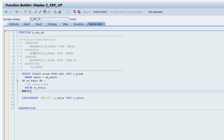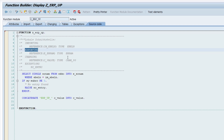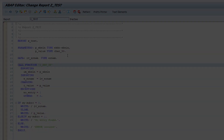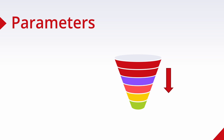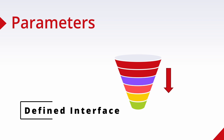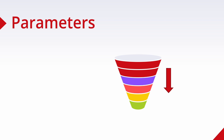Now I would like to explain parameters more closely, because it is important that in the definition of the function module you use importing and exporting, whereas when you call a function module you use them the other way around. Data is transferred via a defined interface consisting of various parameters - the parameters are the interface. Import parameters are used to pass values or variables to the function module when it is called. Import parameters are passed with the keyword EXPORTING when the function module is called - you export values to the function module, and the function module imports them.